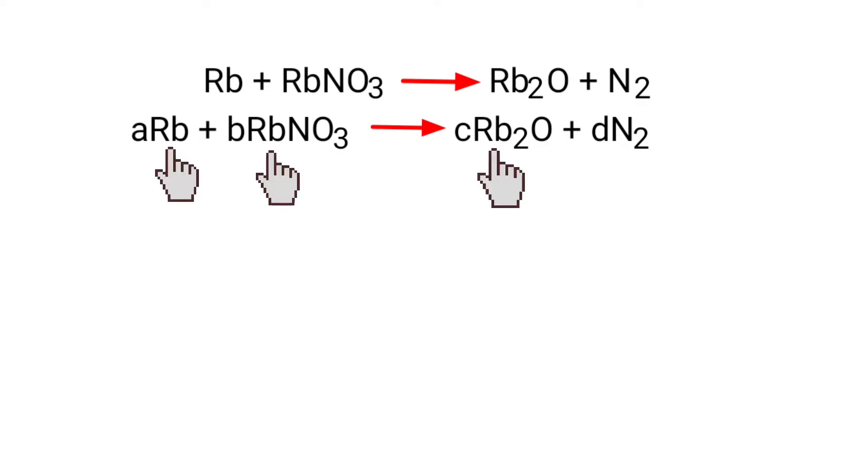For Rubidium: a + b = 2c. For Nitrogen: b = 2d. For Oxygen: 3b = c.